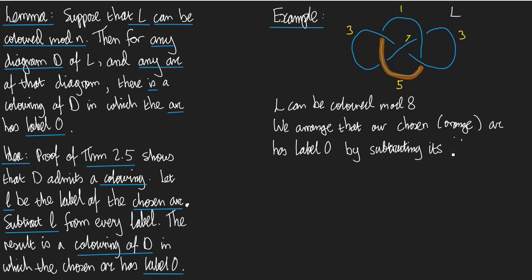I can't spell the word label. By subtracting its label, that's the thing, which in the idea over here I call L, and which in this case is 5, from all labels in the colouring.